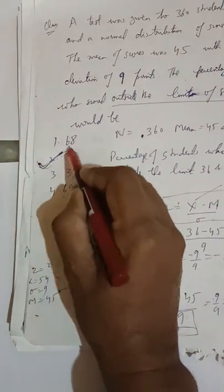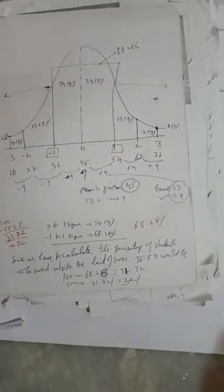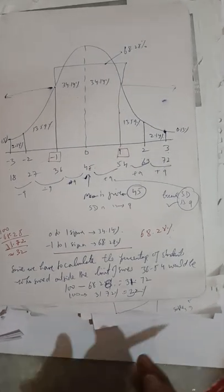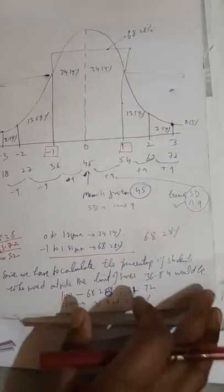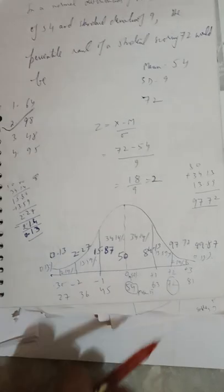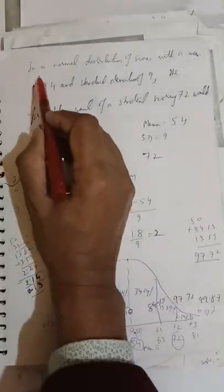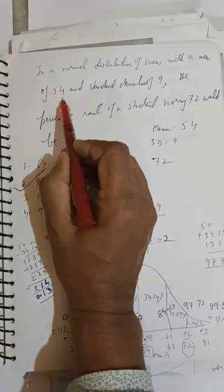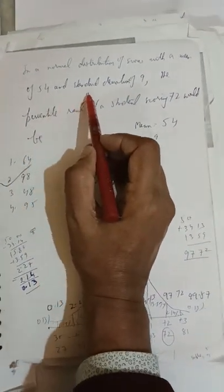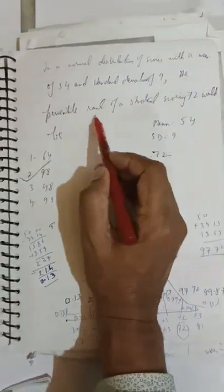So our correct answer to this question would be option 2, that is 32. I think you understood this. Now we move to next question. In a normal distribution of scores with a mean of 54 and a standard deviation of 9...